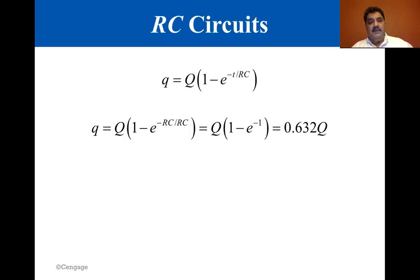So you should be familiar with these already. q equals Q times 1 minus e to the minus t/RC, where RC is the time constant. q equals Q times 1 minus e to the minus 1. And if you calculate that out, it's 0.632 Q.